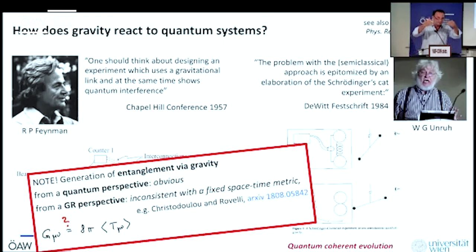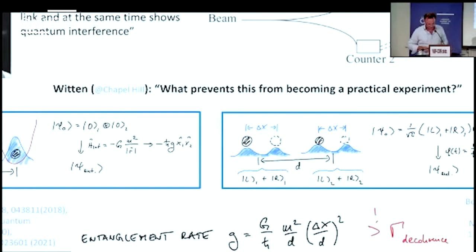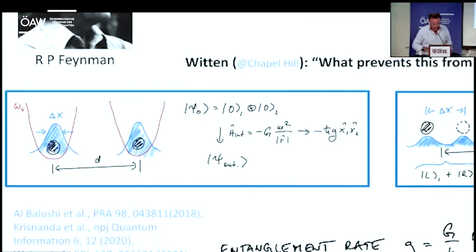What are the possibilities? How can we generate entanglement using gravity? There are two possibilities. Number one, we asked the question Louis Witten asked at the Chapel Hill conference, the father of Ed Witten: what prevents Feynman's Gedanken experiment from becoming a practical experiment? Your two masses are simply harmonic oscillators. They couple via gravity. In second order, the coupling, the one over r potential here, in second order has the xx term. And the xx term for two harmonic oscillators just generates entanglement between the two. You can compute the rate at which this happens as a two-line calculation.